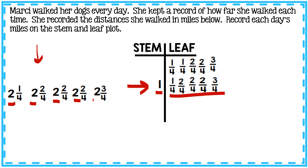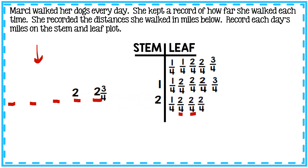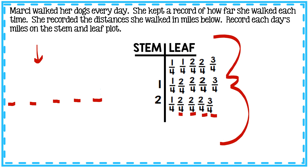Now over here I have the days she walked two miles. The two goes on the stem as the next row. She walked two and one-fourth miles — the one-fourth goes on the leaf. Then two and two-fourths miles, two and two-fourths again, two and two-fourths another day, and the last day in the data set is two and three-fourths miles. Numbers go in order from least to greatest across each row and also moving down the rows.